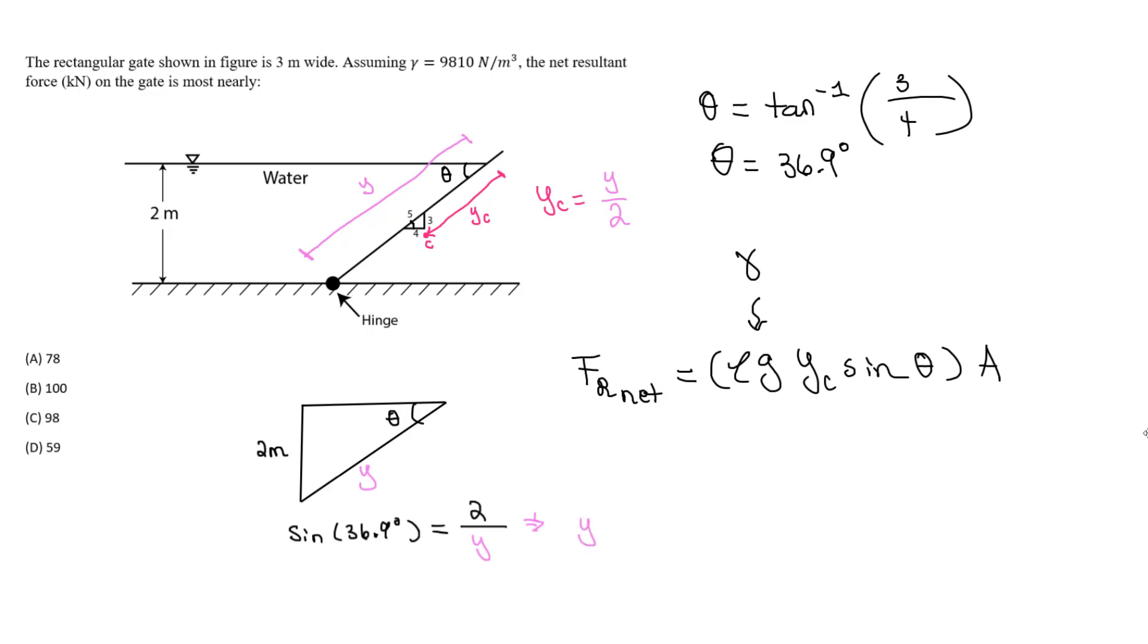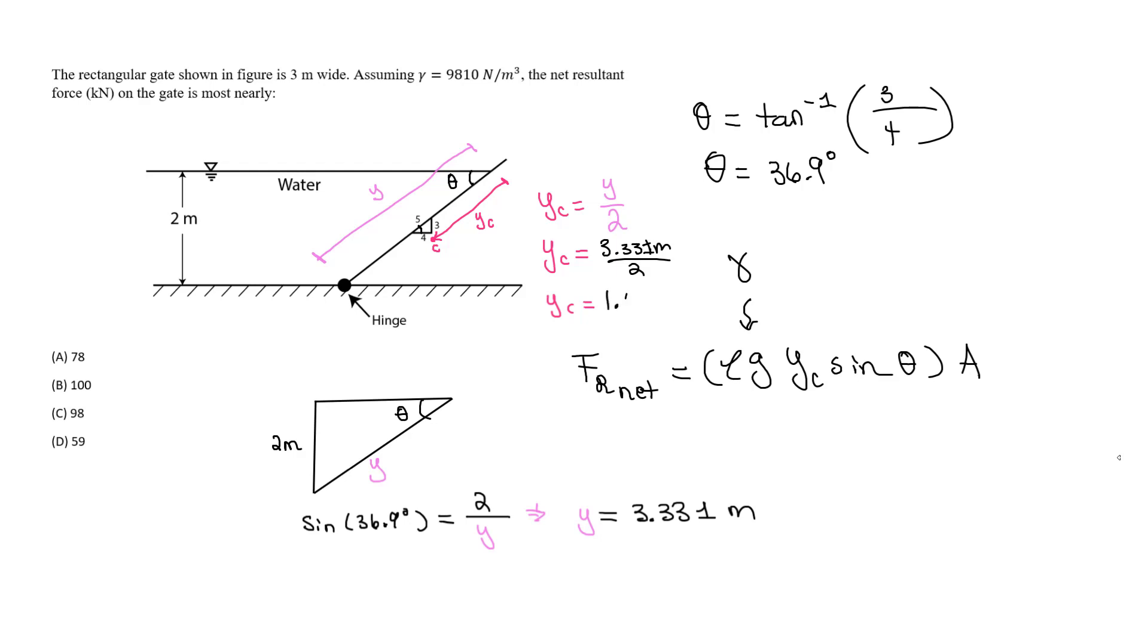Y should equal to, if you do the math, 3.331 meters. We have our y value. Knowing that y value, we can find y sub c. Y sub c is going to equal the 3.331 meters divided by 2, so y sub c is around 1.66 or 1.67 meters.